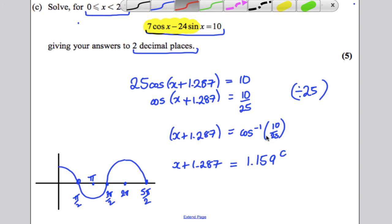So 1.159 is one of our solutions. Now, that's less than pi by 2, so there's some here. So here's one of our solutions here. Now, where are the other ones? Well, there'll be one here, and there'll be one here.